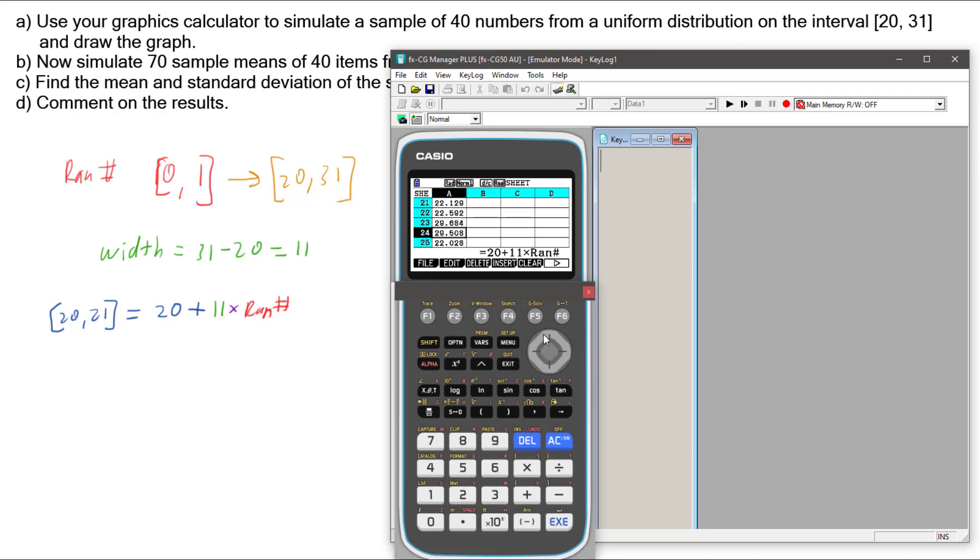Now we want to graph this. To graph it, I'm going to go around to our graphing menu, and we're going to set up our graph. I'm going to go to set, we're setting up graph 1, we want it to be a histogram. Currently it's saying that we're going to be doing A1 to A50, we want it to do A1 to A40, because we only have 40 samples. Execute to save, and execute again, and so now we can do graph 1.